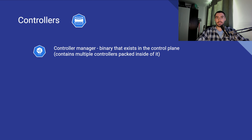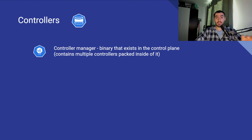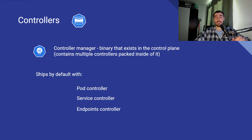Before jumping head first into ingresses we need to understand some other concepts, and the first one is controllers. We've spoken about controller manager in the initial video regarding Kubernetes architecture — that's a manager of controllers. Think about a controller as the process which supervises all objects of the same type. Kubernetes by default ships with certain controllers such as pod controller, service controller, and endpoints controller, and so on.